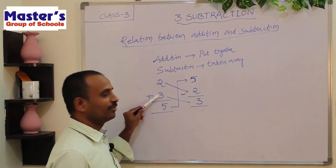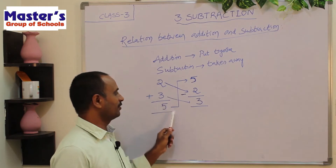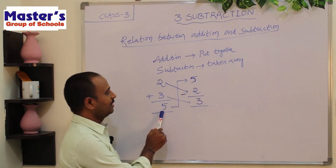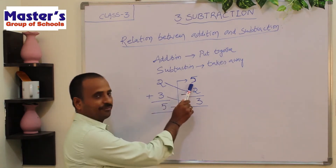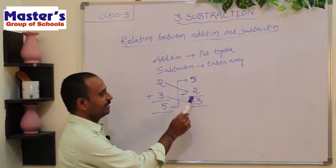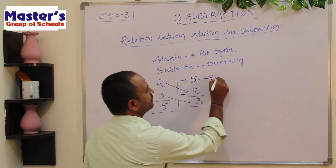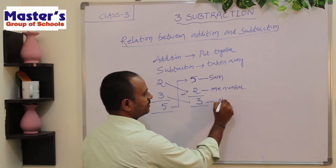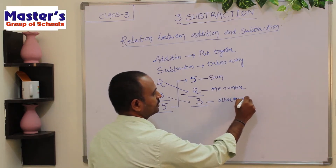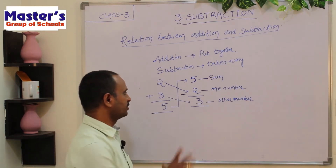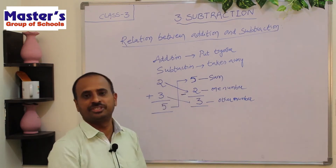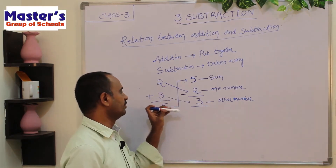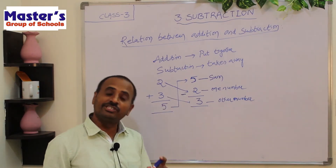The sum of 2 numbers is 5. I added 2 and 3 and got 5 as the sum. If we subtract any one of these 2 numbers from the sum, we get the other number. So this is the relation between addition and subtraction — both are opposite to each other. If you add 2 numbers you get the sum, and if you subtract any number from the sum, you again get the other number.